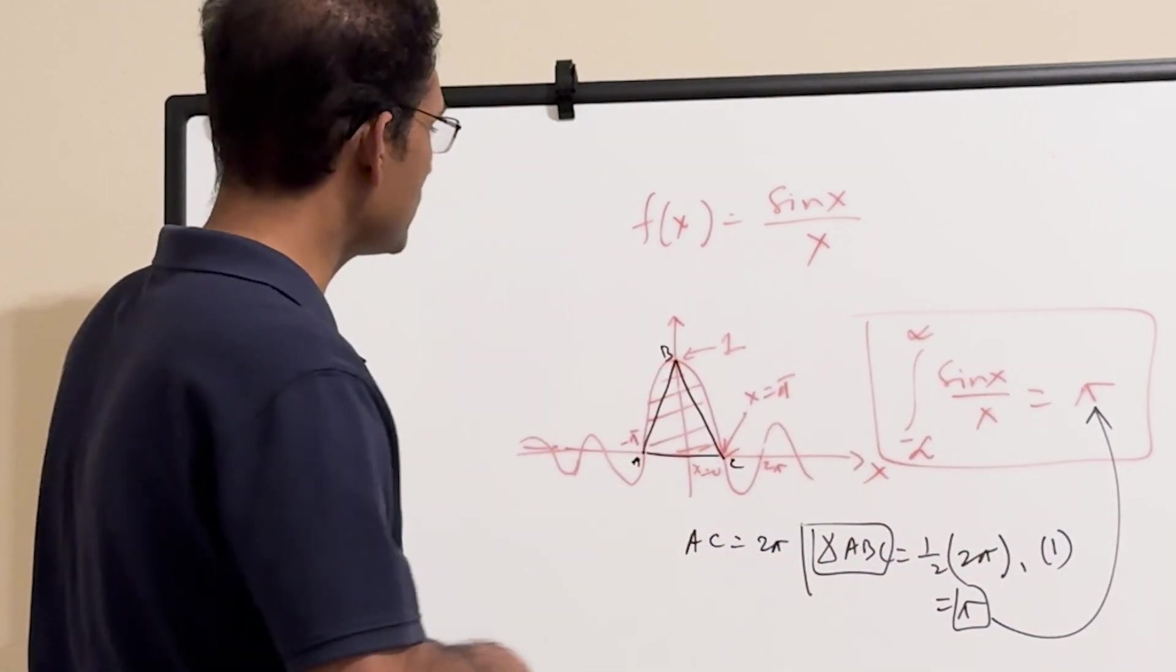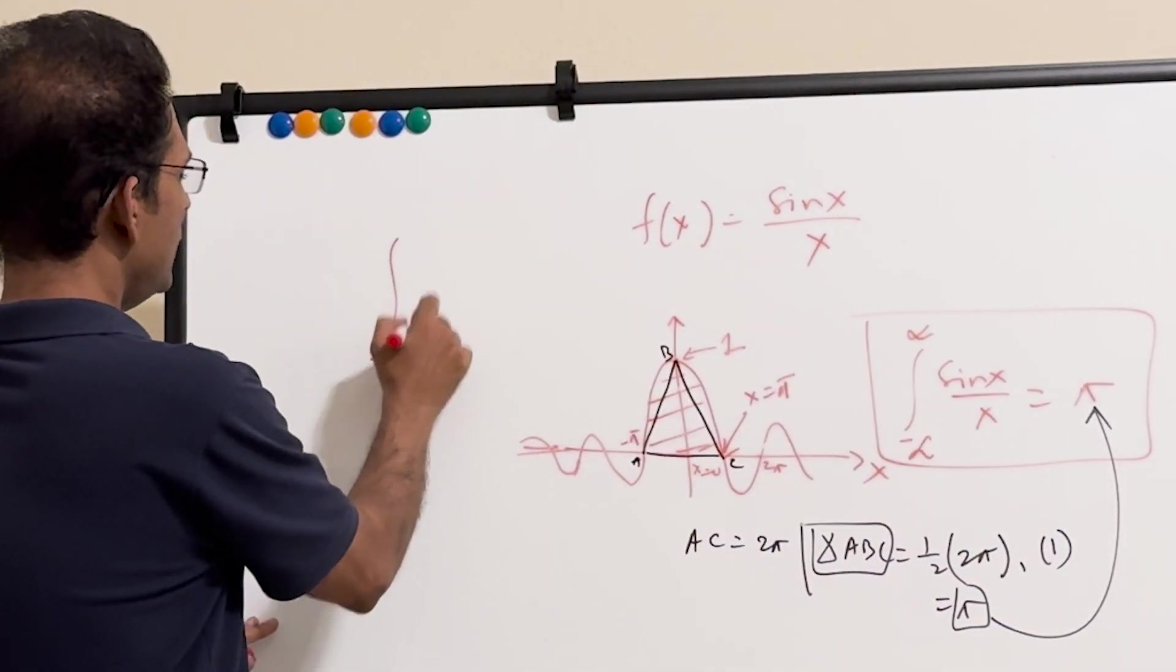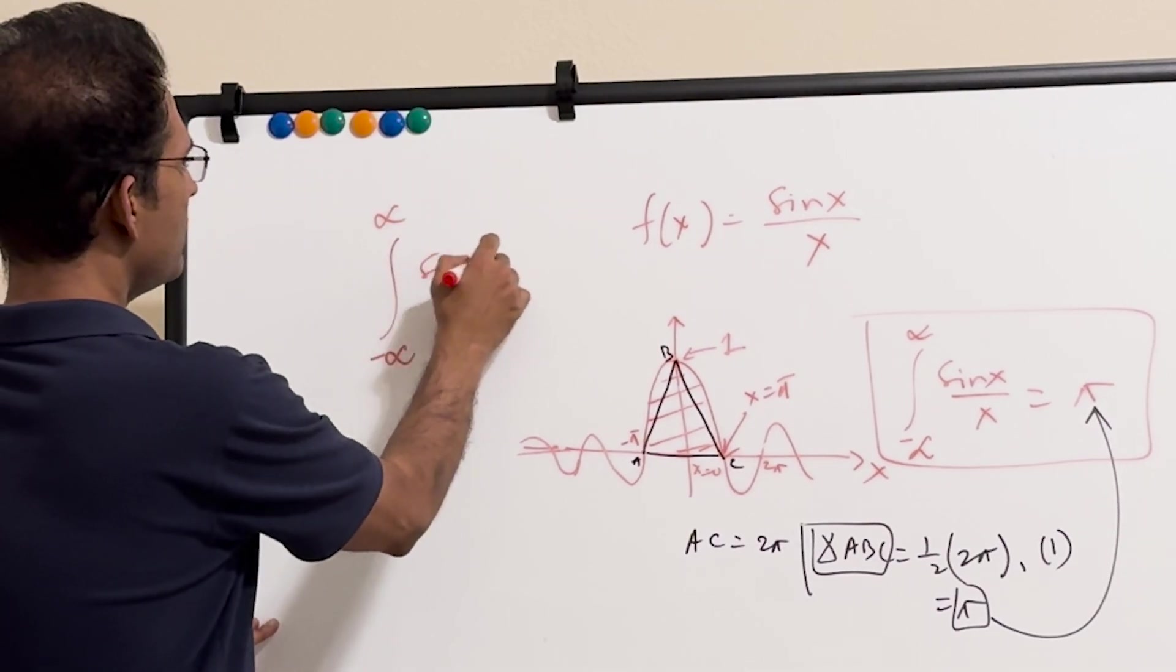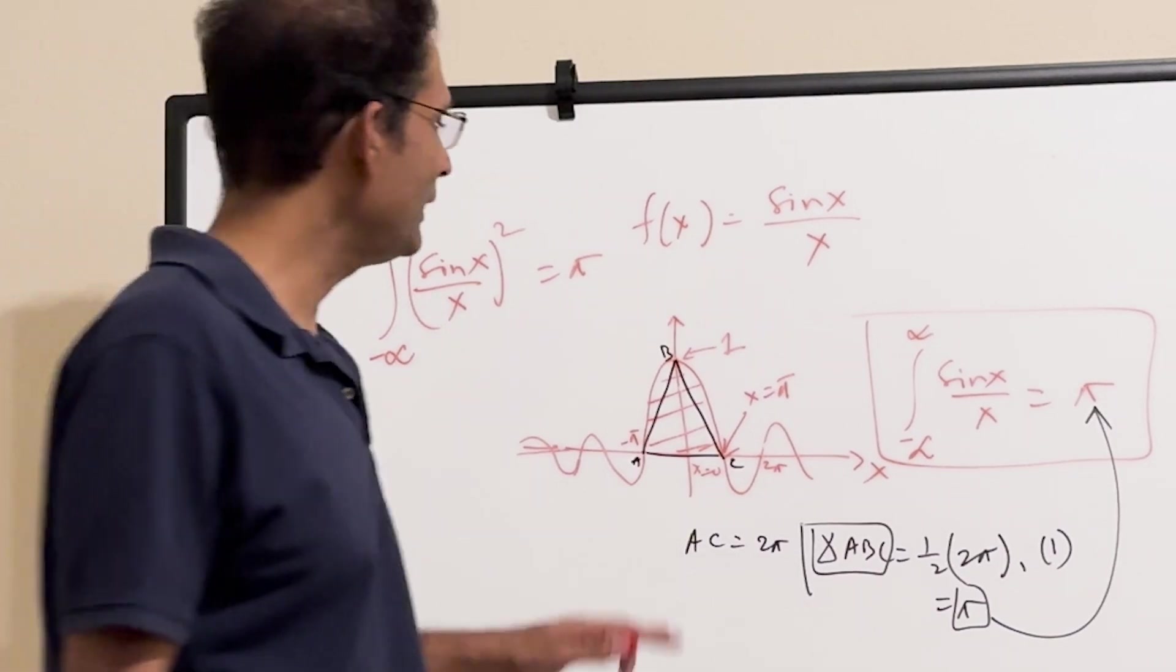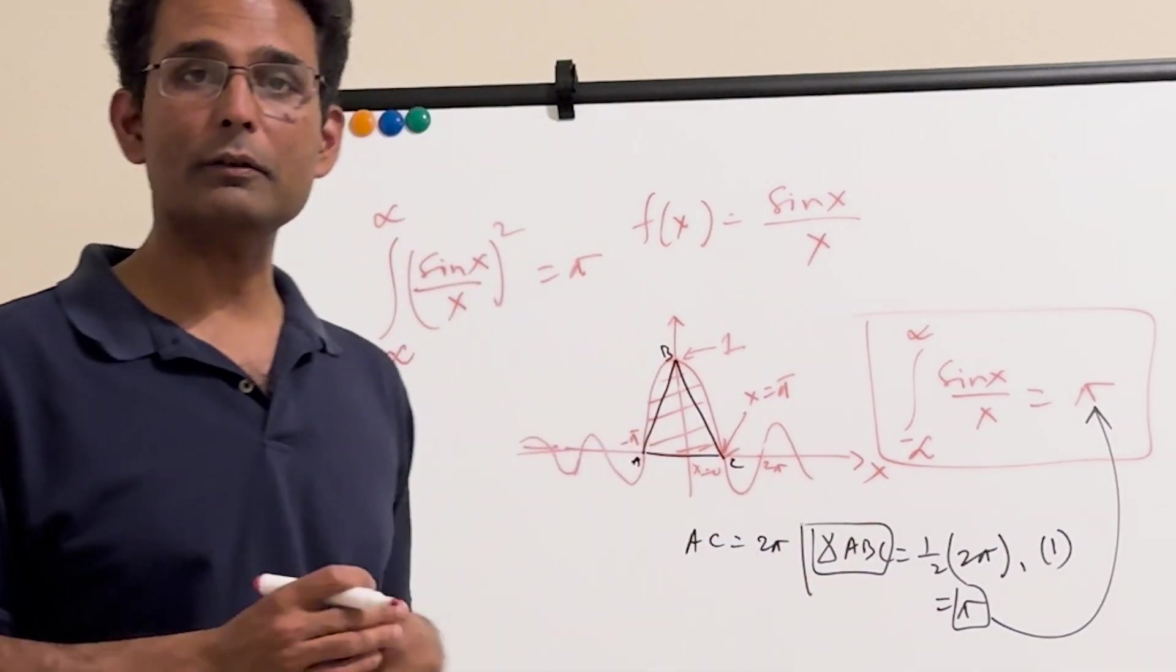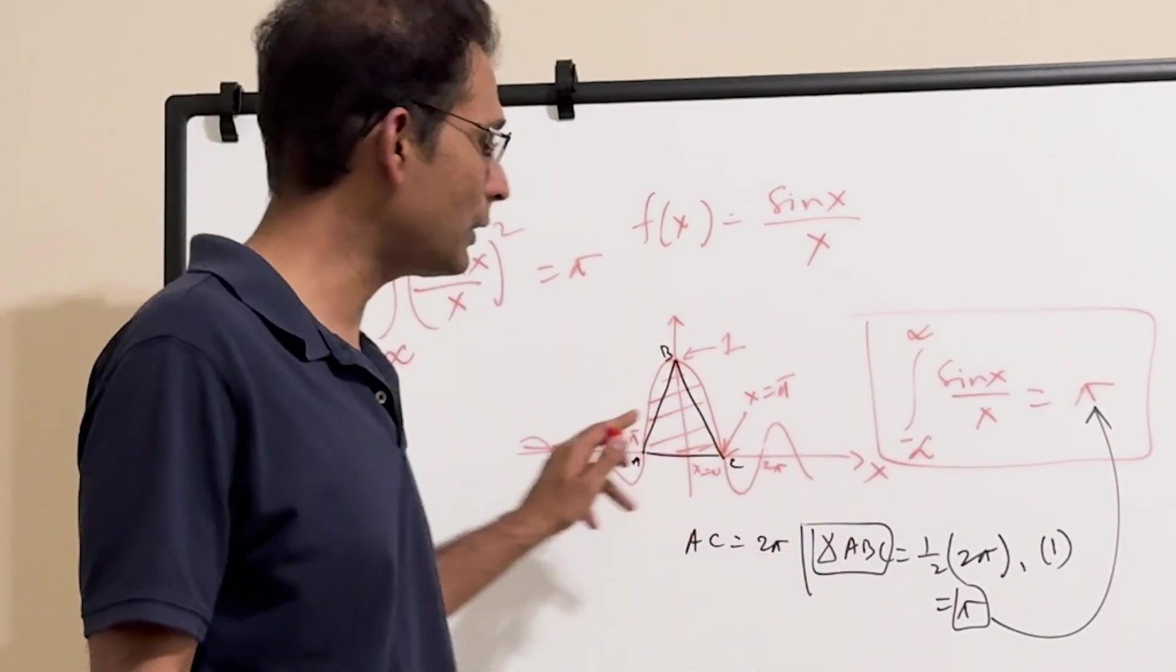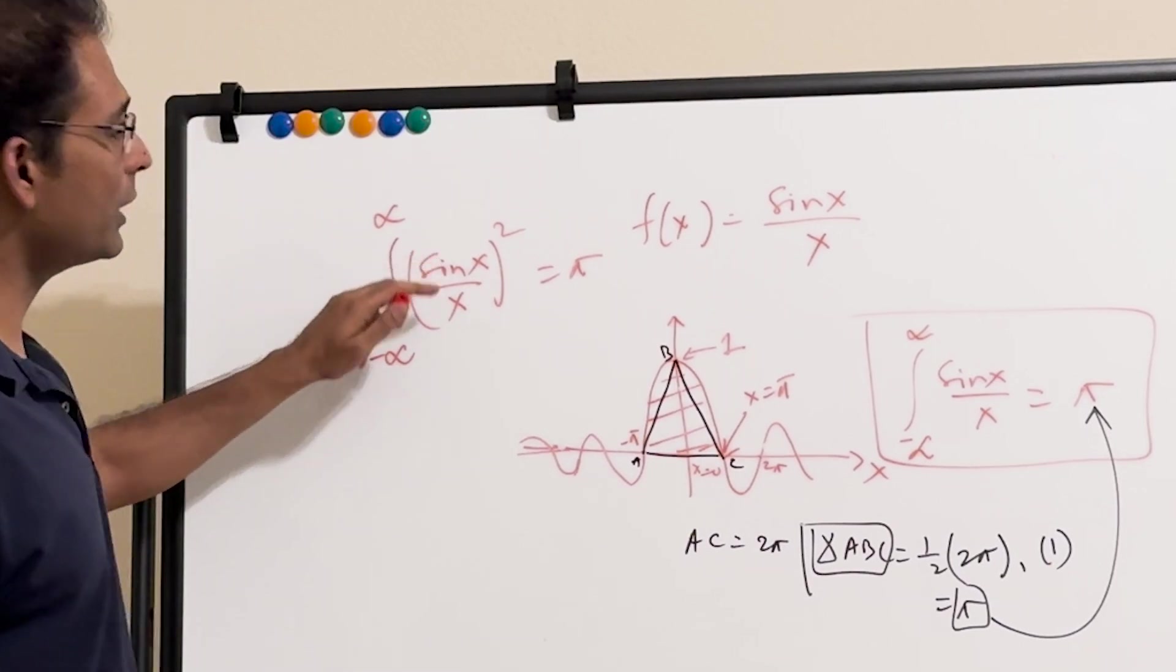Now you square this function, and do the integral. So now I'm doing the integral of sin x over x squared. That is also pi, actually. So I don't know if it's true for any other functions, but it's true for sin x over x.